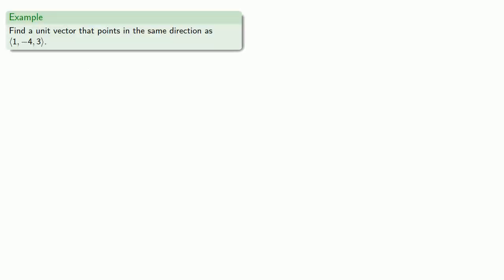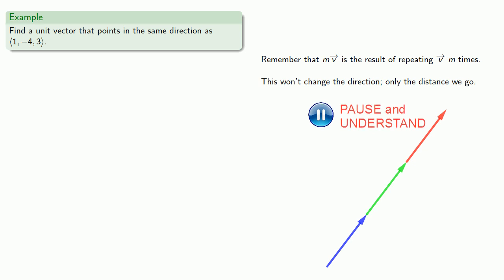So let's find a unit vector that points in the same direction as (1, 4, -3). Well, let's think about how we might do this. Remember that m·v is the result of repeating v m times. But this won't change the direction, only the distance we go.